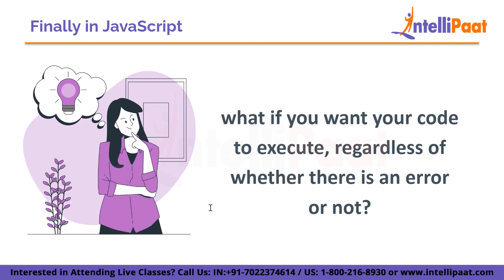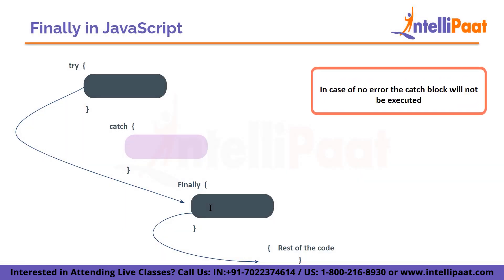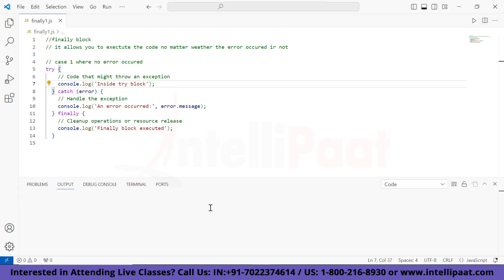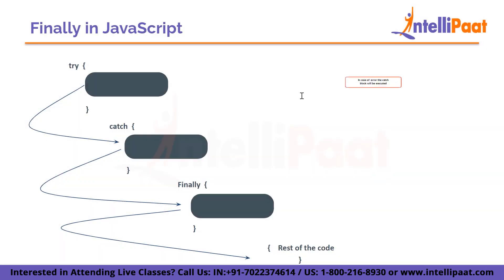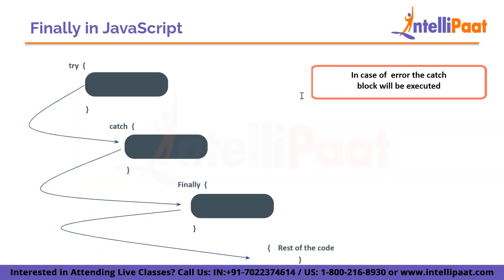Moving on — what if you want your code to execute regardless of whether there is an error or not? In that case, we use the finally block. We usually place the finally block right after the try and catch blocks. Let's understand it with two cases. Case one: where there is no error in the code. We use a print statement to see how execution works. There is no error, so it will first execute the try block and then execute the finally block.